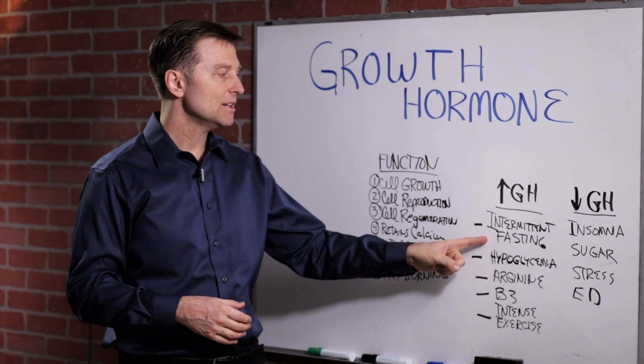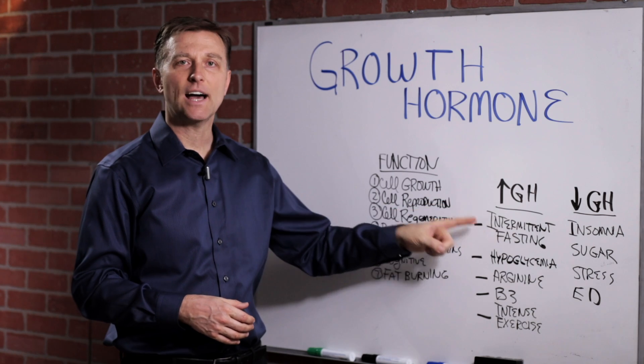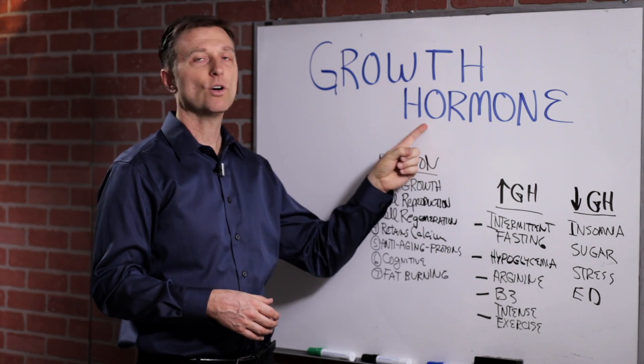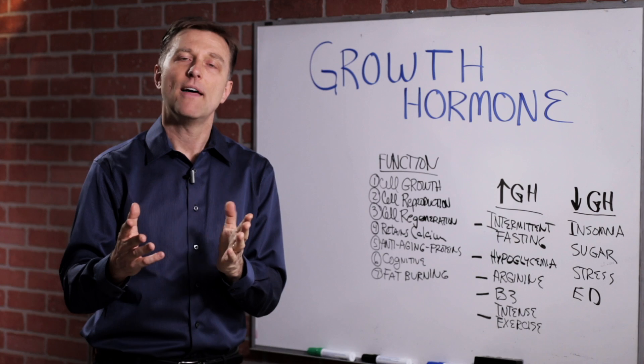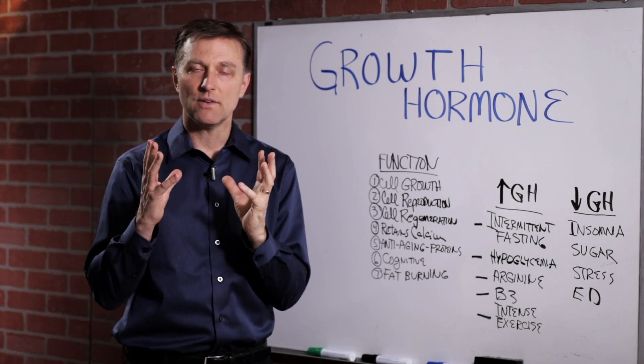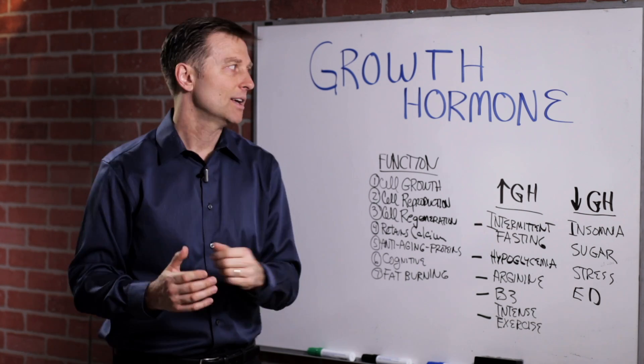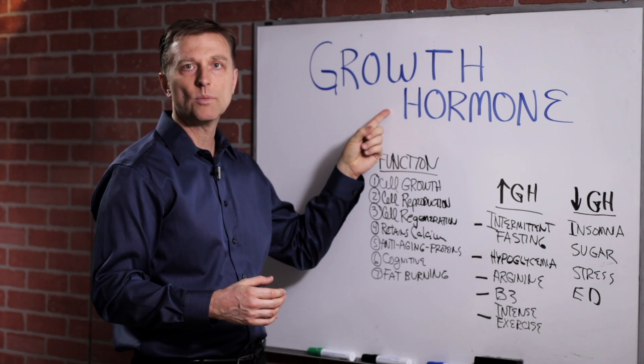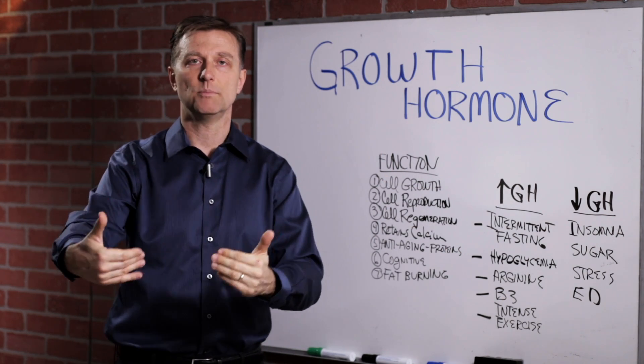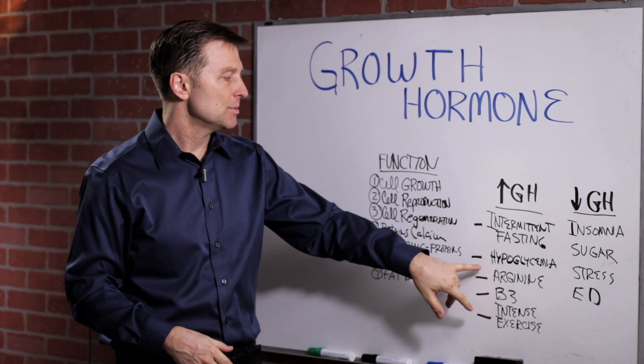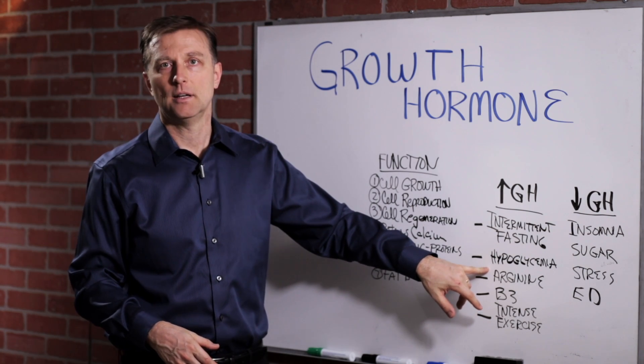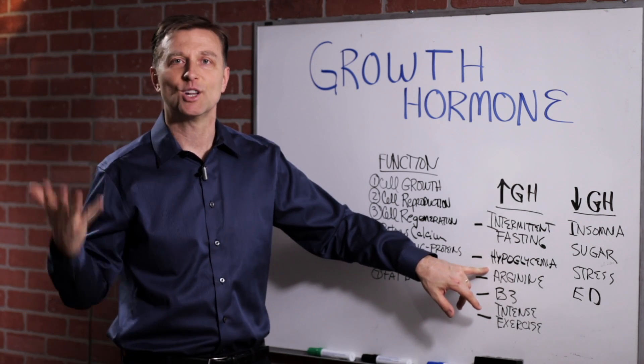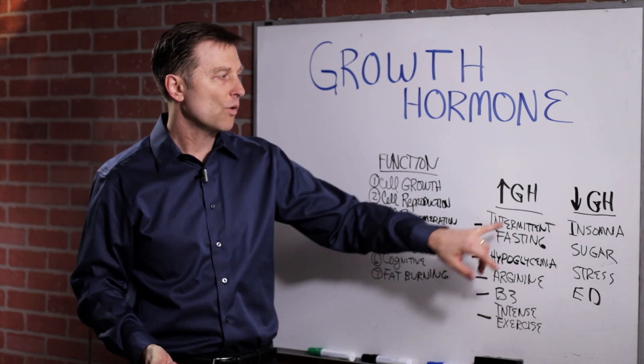And there are things that you can do to naturally improve it. So number one, intermittent fasting. Fasting and intermittent fasting will increase growth hormone, which also means that, you know, you have this concern about losing muscle mass. Well, if you do intermittent fasting, you're going to enhance growth hormone and protect your muscles from being lost. Number two, hypoglycemia. Basically keeping your blood sugars low because the things that lower growth hormone is sugar.